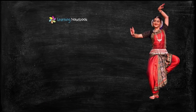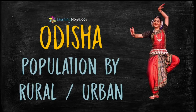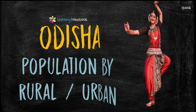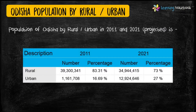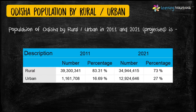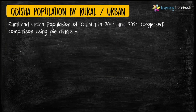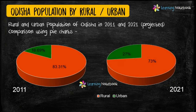Next idea is population by rural or urban. See here how we have used two pie charts to compare rural and urban population of Odisha.